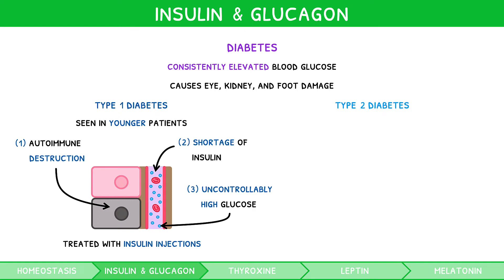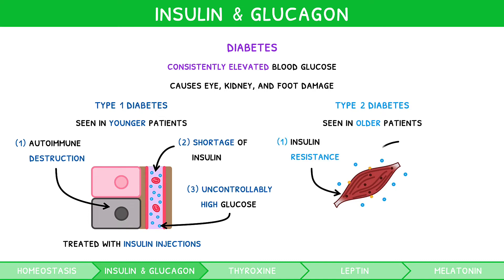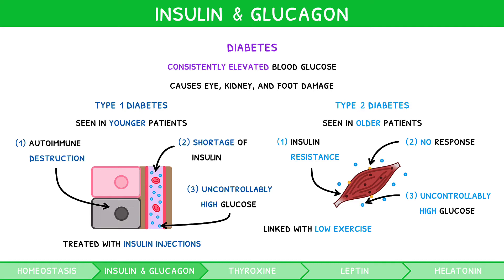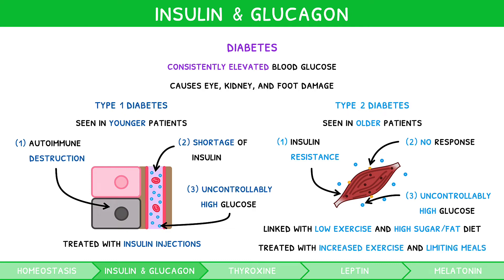Type 2 diabetes is seen mostly in older patients, however in recent years has been appearing in younger patients too. In this disease, there is resistance to insulin, so receptors no longer respond to the insulin present. Just like with type 1, the result is uncontrollably high blood glucose levels. The difference is that patients have enough insulin — it just doesn't work. Type 2 diabetes is especially associated with a lack of exercise and a diet consisting of sugary and high-fat foods. Treatment therefore includes increasing exercise and limiting large meals, or those high in sugar and fat.